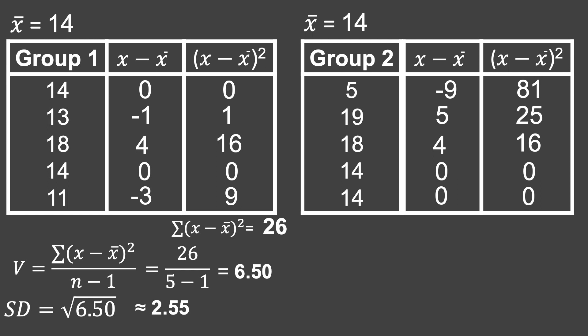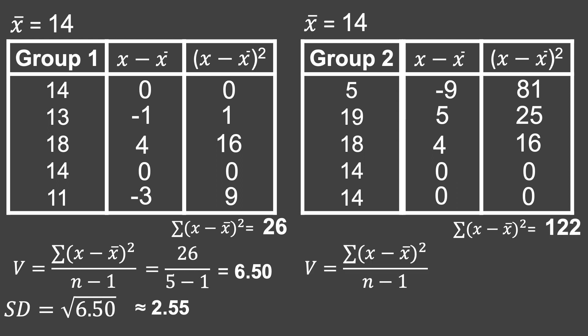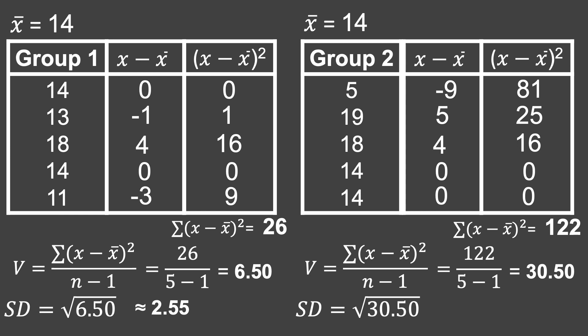For the second group, the sum of the squared differences is 81 + 25 + 16 + 0 + 0 = 122. Substituting into the variance formula: 122 all over 5 − 1, with sample size still 5. So 122 divided by 4 equals 30.50. Taking the square root gives the standard deviation, which is approximately 5.52.